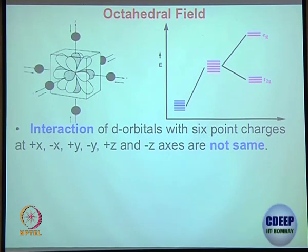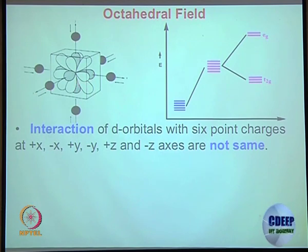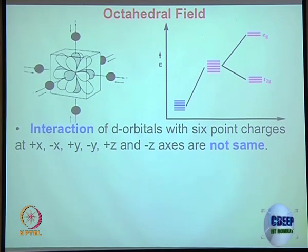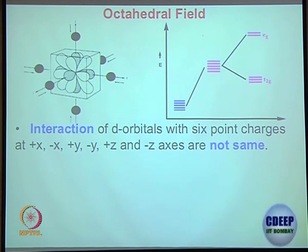Another way to look at it: 6 ligands shown as black balls, and all d orbitals superimposed, showing which are facing which. For the octahedral field, the two higher-energy orbitals are called Eg orbitals, and the three lower-energy orbitals are called T2g orbitals. Eg is dx²-y² and dz², while T2g is dyz, dxz, and dxy — 3 orbitals versus 2 orbitals.